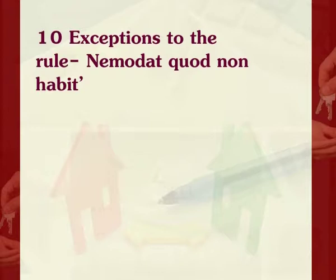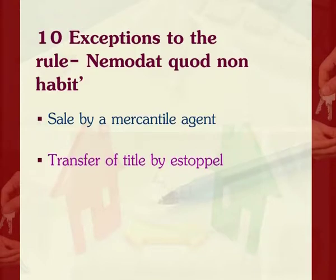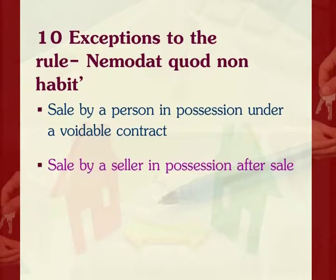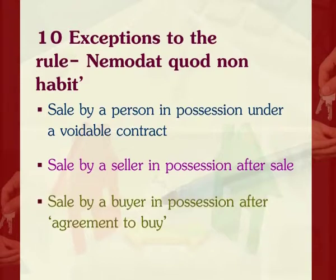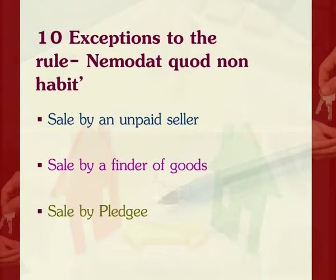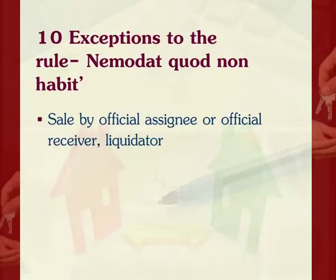The 10 exceptions to the rule Nemo dat quod non habet are: first, sale by a mercantile agent; second, transfer of title by estoppel; third, sale by one of the joint owners; fourth, sale by a person in possession under a voidable contract; fifth, sale by a seller in possession after sale; sixth, sale by a buyer in possession after agreement to buy; seventh, sale by an unpaid seller; eighth, sale by a finder of goods; ninth, sale by a pledgee; and lastly, sale by an official assignee or official receiver.